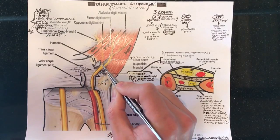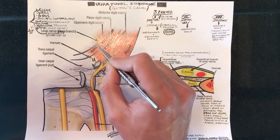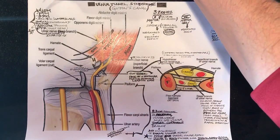So as we see here the ulnar nerve is going to give off a deep branch. The deep branch is purely motor. It gives off the motor to the intrinsic musculature of the hand.